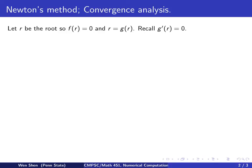Let r be the root, so that f(r) equals 0, and r equals g(r) — it's a fixed point iteration. From the previous analysis we know this is the best fixed point iteration, so g'(r) equals 0.